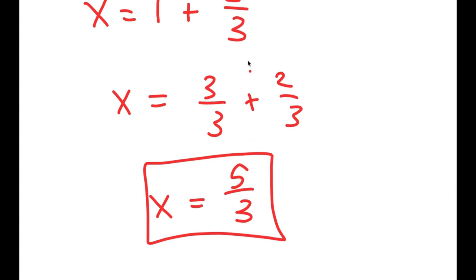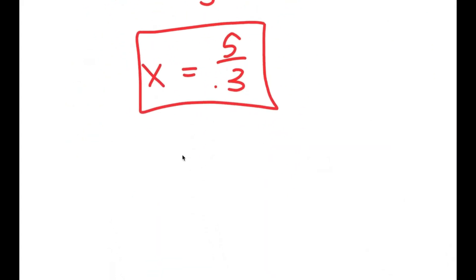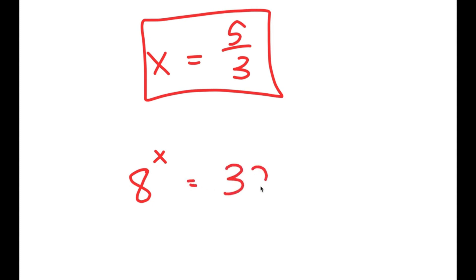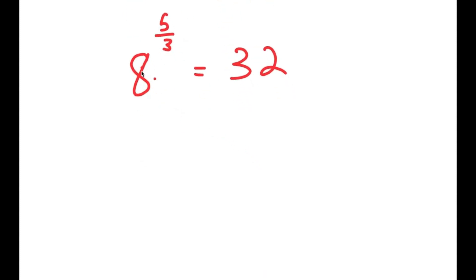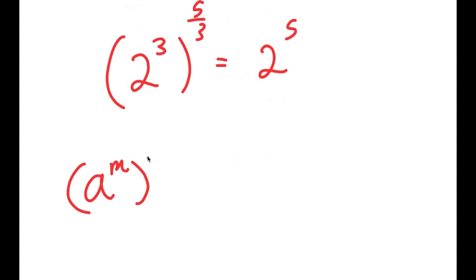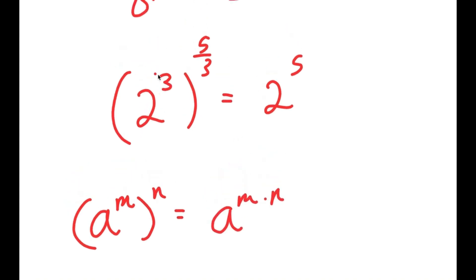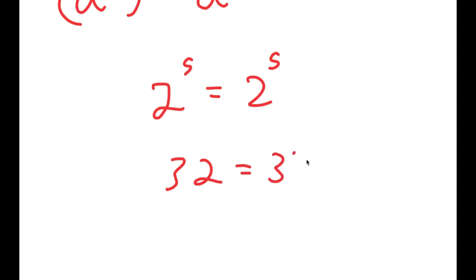How do we know this is the right answer? Going back, we have 8 to the power of x equals 32, and we're plugging in 5 over 3. So 8 to the power of 5 over 3 should equal 32, which is 2 to the power of 5. Since 8 is 2 to the power of 3, we get 2 to the power of 3 to the power of 5 over 3. Using the rule a to the power of m to the power of n equals a to the power of m times n, the 3s cancel, giving 2 to the power of 5 equals 2 to the power of 5. This is correct.